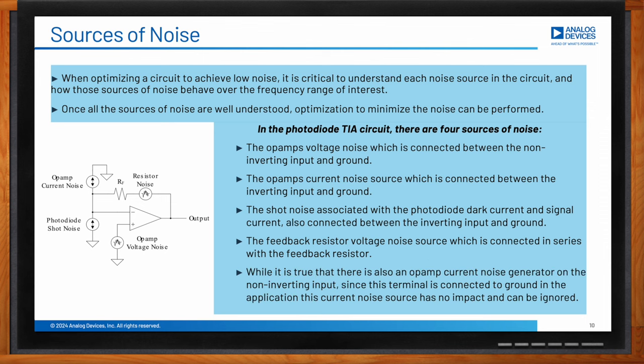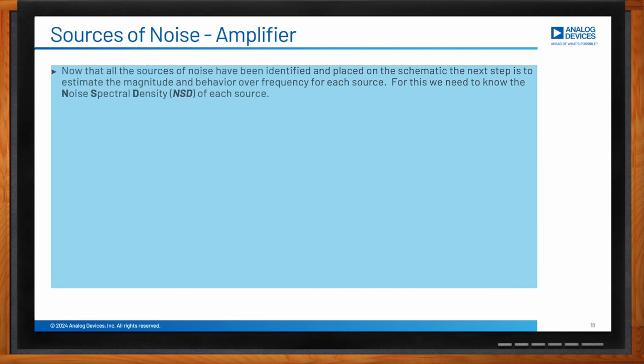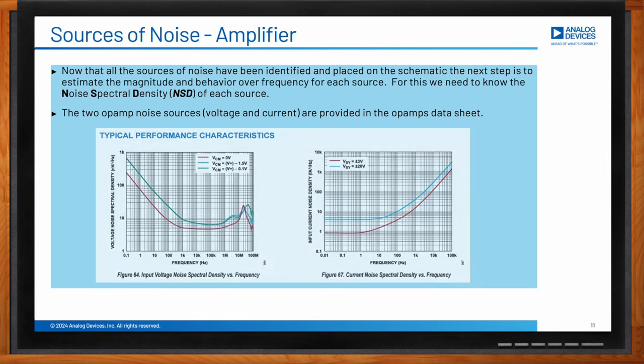After identifying where noise sources are, the next step is to determine the magnitude of each and how it behaves over frequency. The op-amp has two noise sources — a voltage noise source and a current noise source. Information about these can be found in the amplifier's datasheet typical curve section, which contains everything you need.